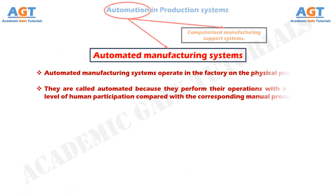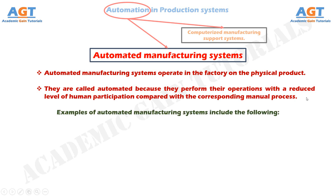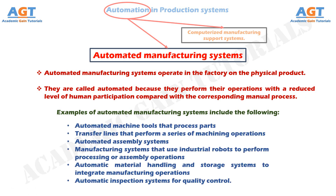Automated Manufacturing Systems operate in the factory on the physical product. They perform operations such as processing, assembly, inspection, and material handling, in many cases accomplishing more than one of these operations in the same system. They are called automated because they perform their operations with a reduced level of human participation compared with the corresponding manual process. In some highly automated systems, there is virtually no human participation. Examples include automated machine tools, transfer lines, automated assembly systems, industrial robots, automatic material handling and storage systems, and automatic inspection systems for quality control.